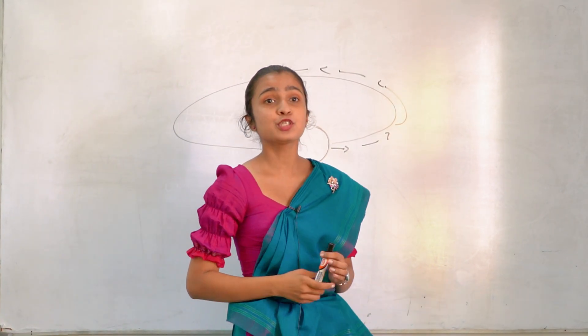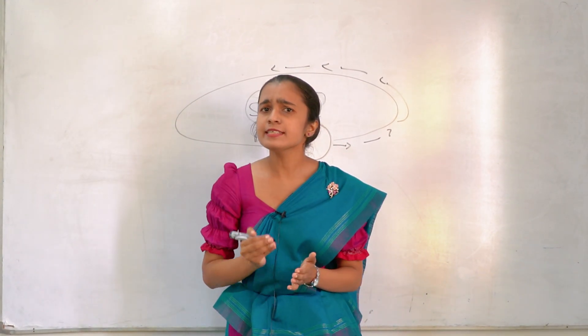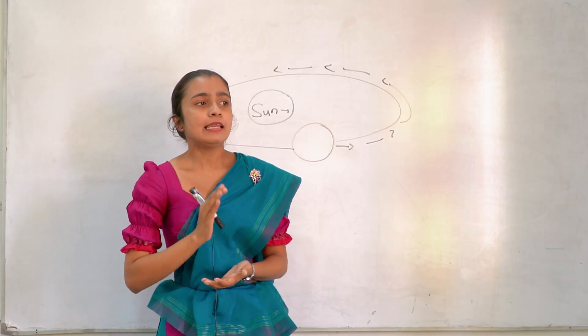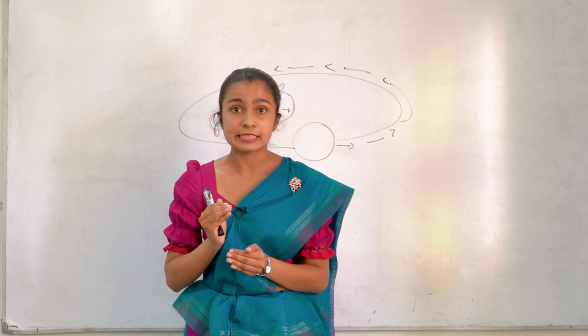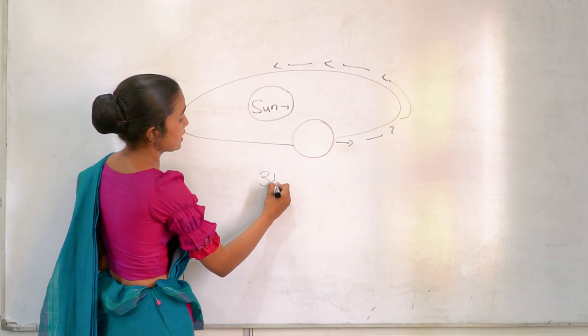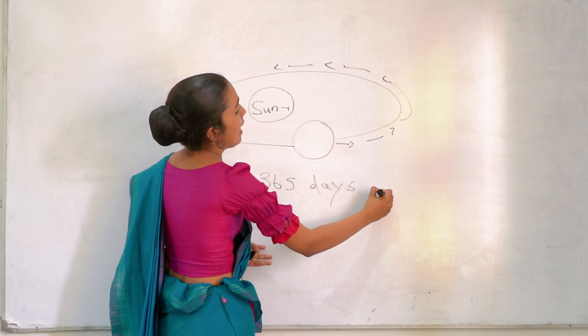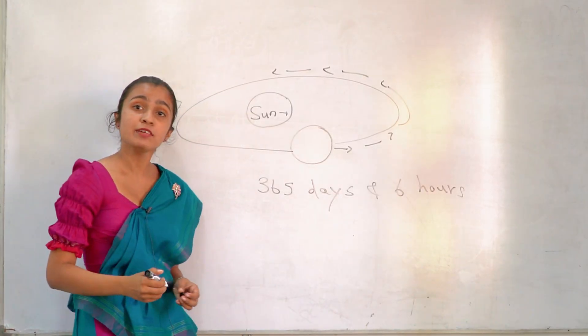Now we are going to talk about our leap year. What is this leap year? Leap year means the actual duration of Earth take place 365 days and 6 hours for revolution.